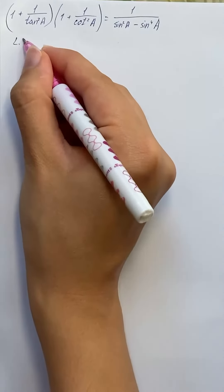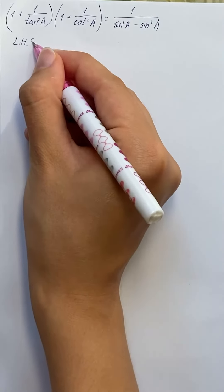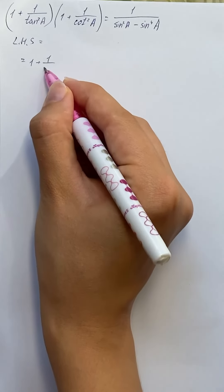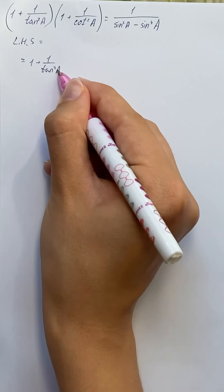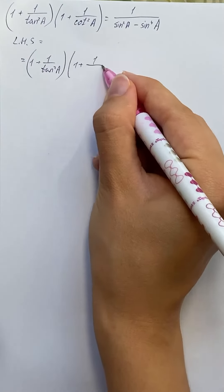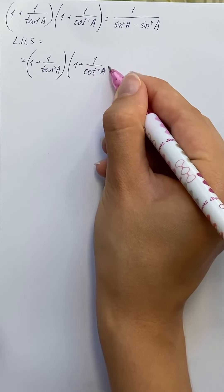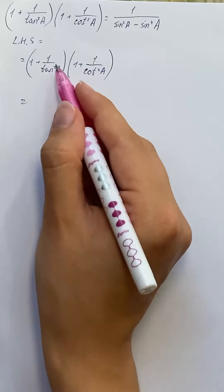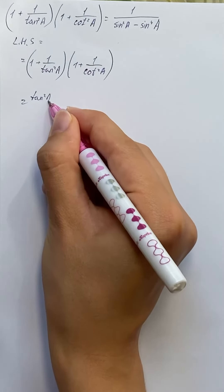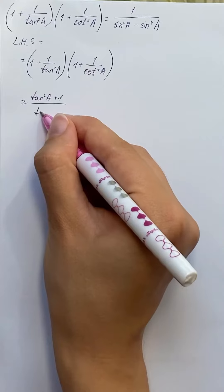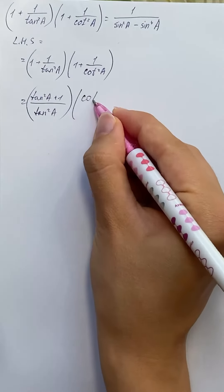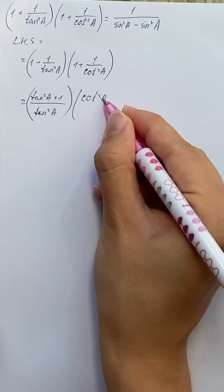We're going to manipulate the left-hand side, which is (1 + 1/tan²a) times (1 + 1/cot²a). Now we're going to find the common denominator, so we get (tan²a + 1)/tan²a times (cot²a + 1)/cot²a.